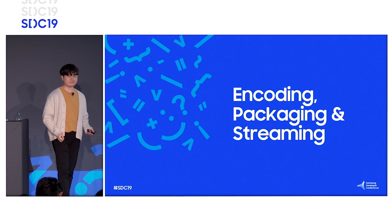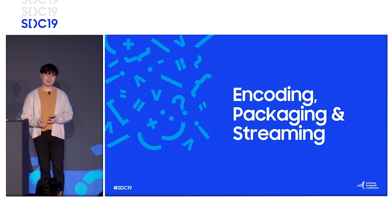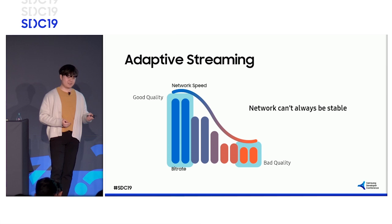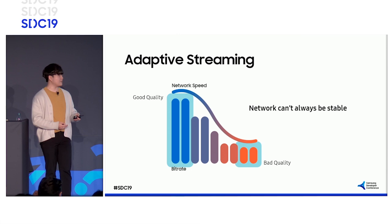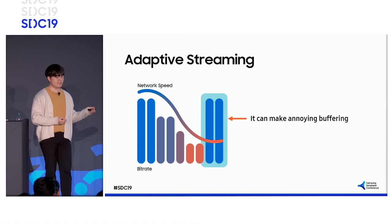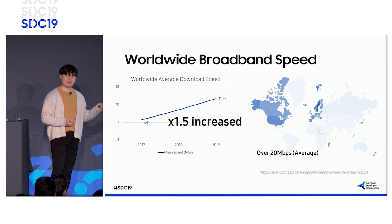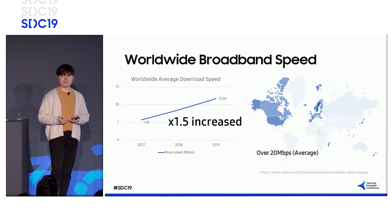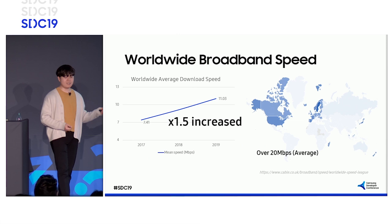First, let's discuss encoding, packaging, and streaming. Streaming means a technology that makes you download and play content over the network at the same time. Adaptive streaming is a technology that smoothly switches to a stream with lower or higher bit rate of the same content depending on network conditions. If your media player receives a high bit rate stream at low network speed, buffering may happen. Network conditions vary by country or time, but the world's average network speed is increasing every year. Therefore, most streaming content providers use adaptive streaming to handle it more flexibly.